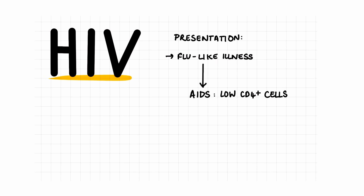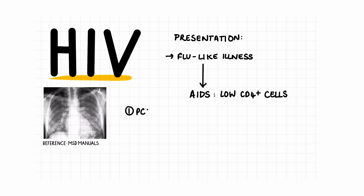Once the CD4 cell count is really low, there are some specific examples of presentations that an HIV patient can experience. Firstly, PCP, or otherwise known as Pneumocystis jirovecii pneumonia, presents similarly to pneumonia, but the patients often have desaturation upon exertion.